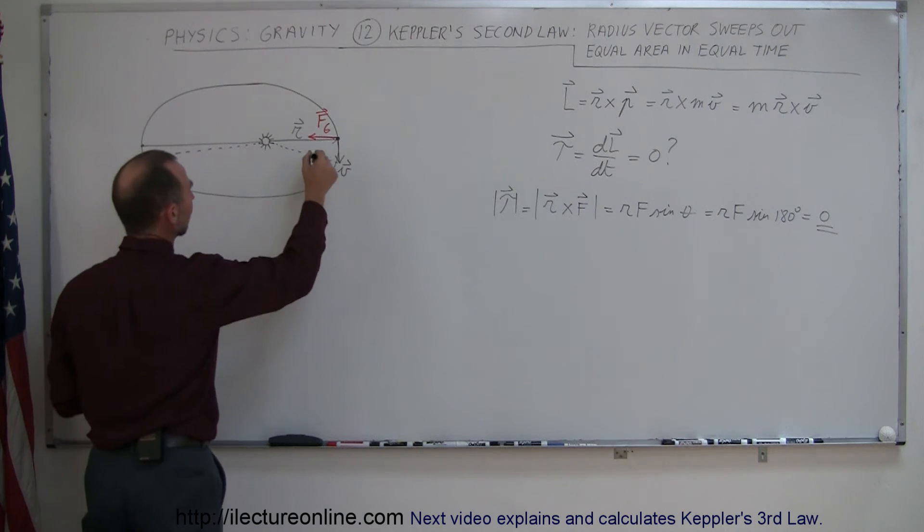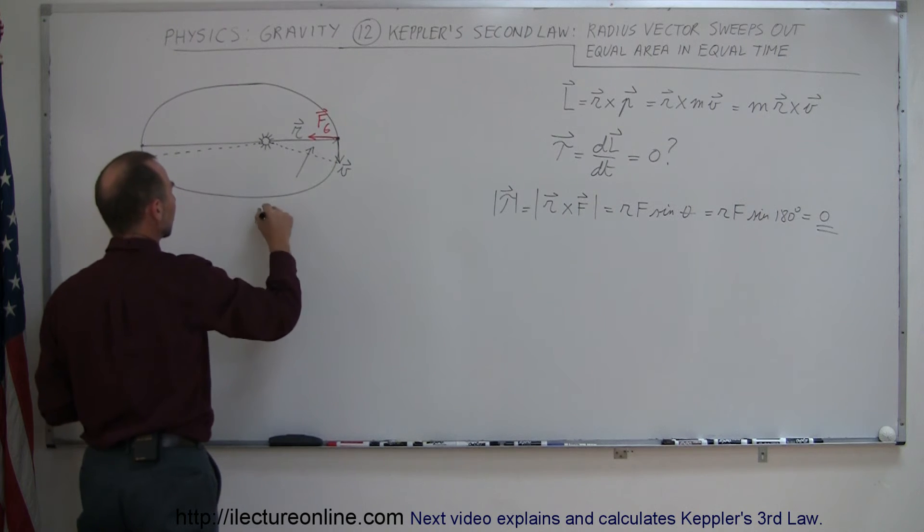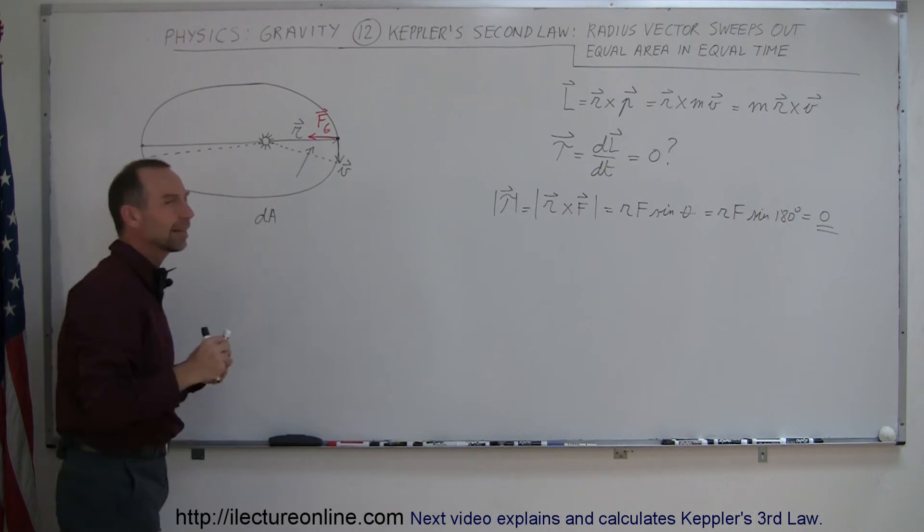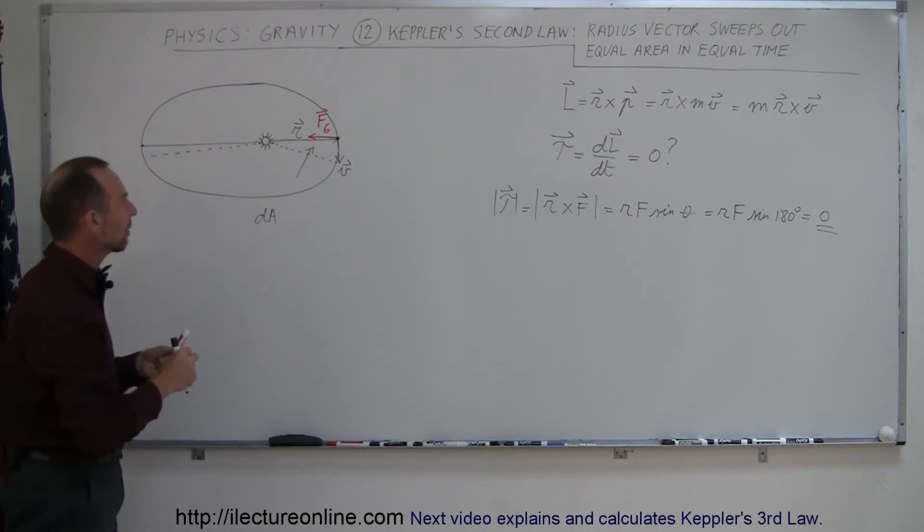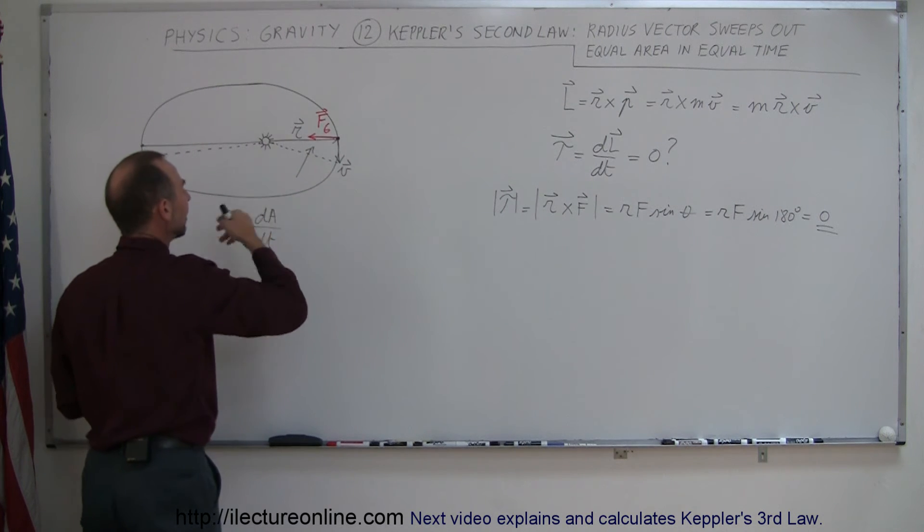So next what we're going to do is we're going to take a look at this area right here, because in a certain amount of dt, this area is being swept out, so let's call this a dA. And then if we say that that much area is swept out per unit of time, we can call it dA dt. So this much area is swept out in so much time, called dt.